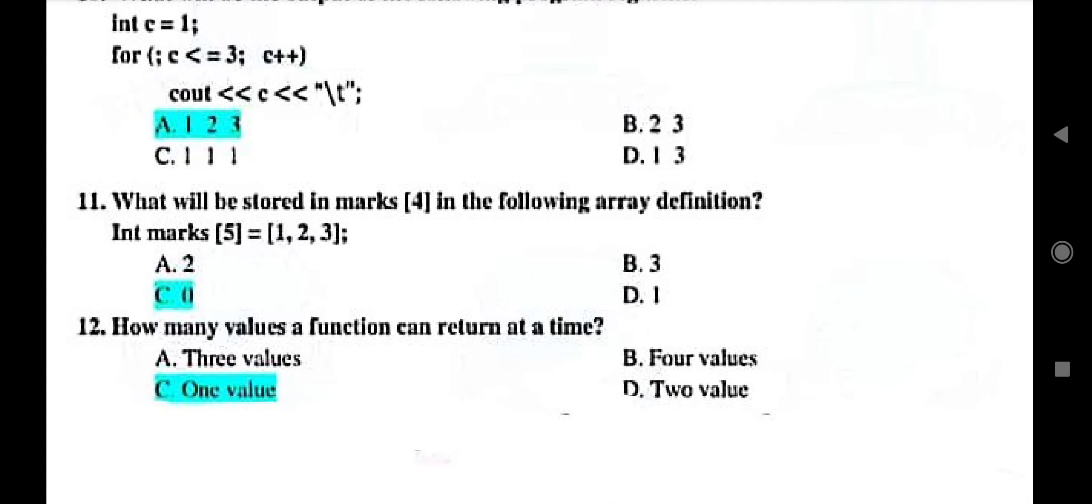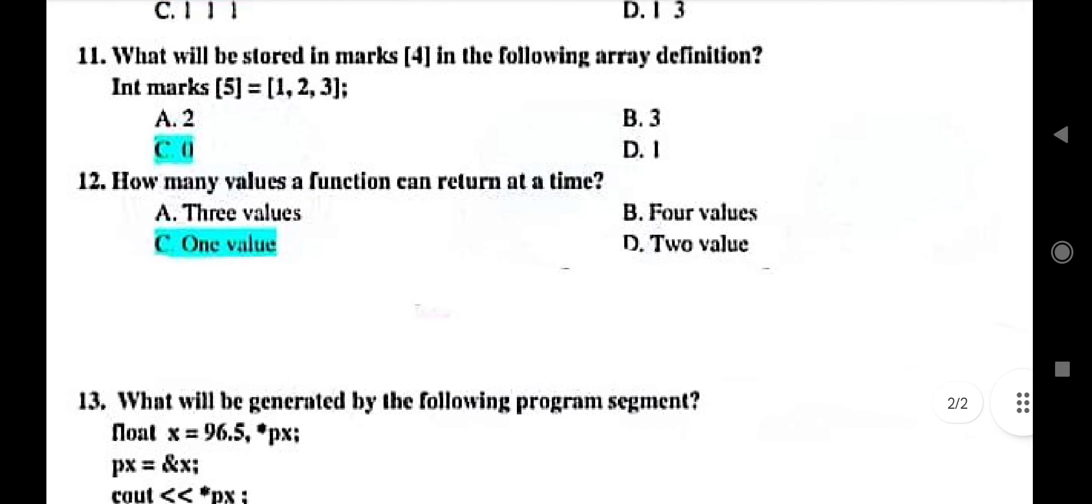Then what will be stored in mark four in the following array definition. So that is option C is the correct option. Then how many values of a function can return at a time. So that is one value.